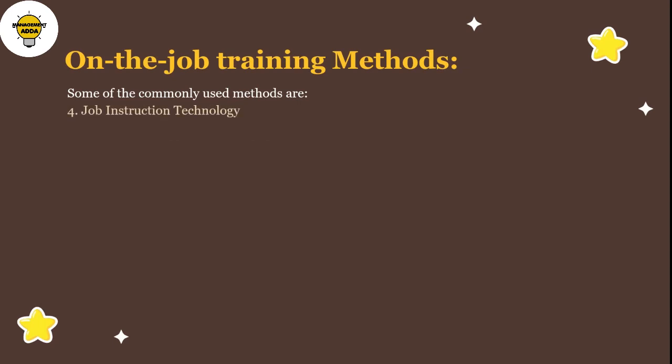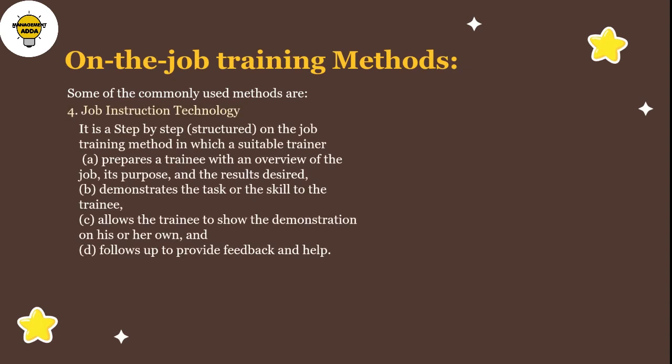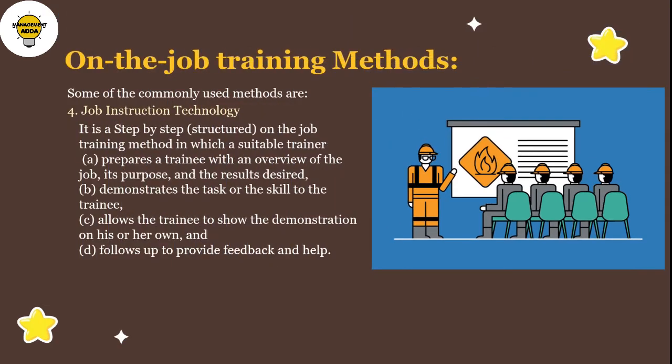Job instruction training is also known as step-by-step training, in which a trainer explains the way of doing a particular job to the trainee. If the trainee makes any mistakes, the trainer helps them correct it and answers their questions or queries.